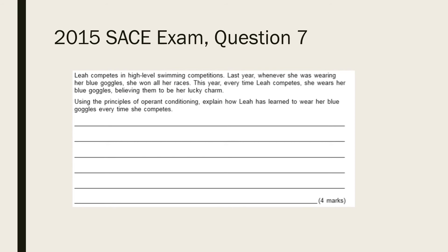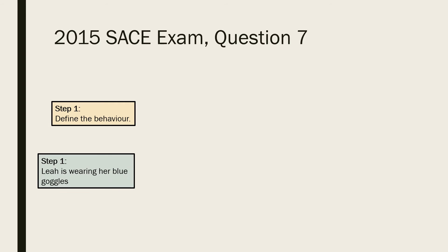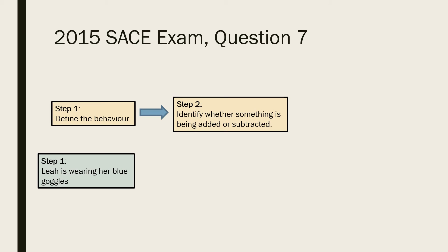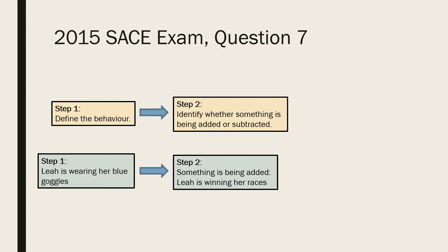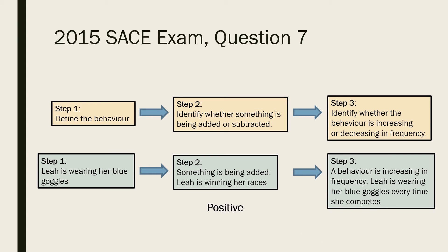Let's apply those three steps to a past exam question. The behaviour is Leah wearing her blue goggles. Something is being added — she is winning her races — making this a positive type of operant conditioning. Leah's behaviour of wearing her blue goggles is increasing in frequency, as she wears them every time she competes. Hence, this is positive reinforcement.